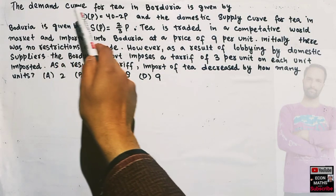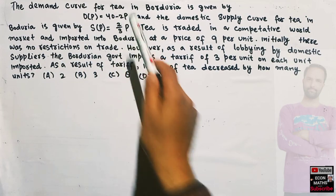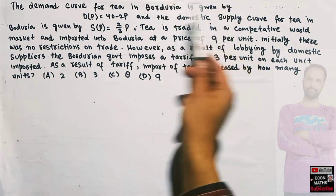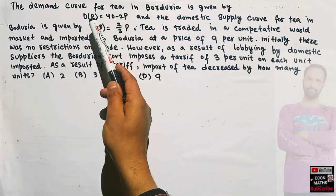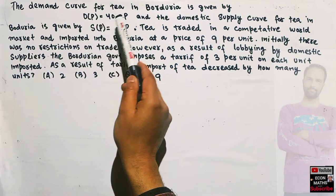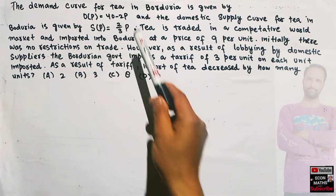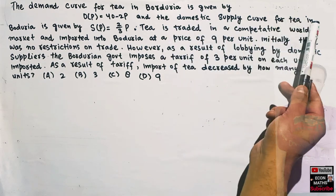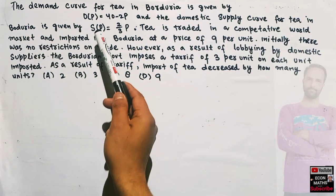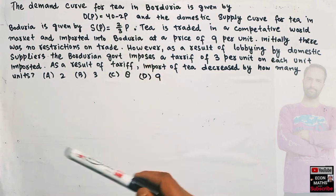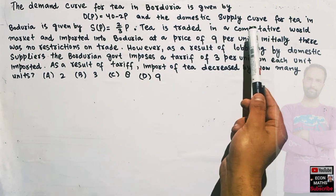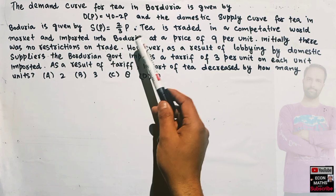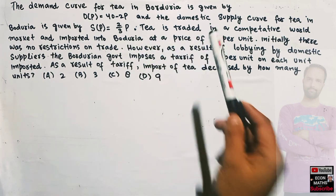The next question: the demand curve for tea in Barodia, a hypothetical country, is given by D(P) = 40 minus 2P, where P denotes the price. The domestic supply for tea in Barodia is given by S(P) = (2/3)P. Tea is traded in a competitive world market and imported into Barodia at a price of 9 per unit.